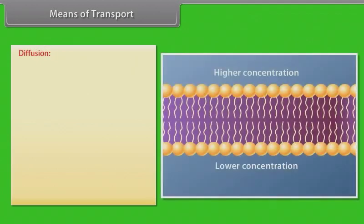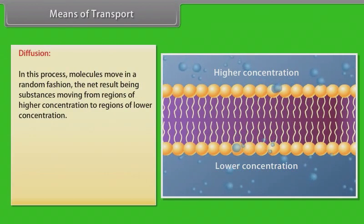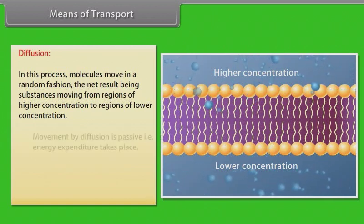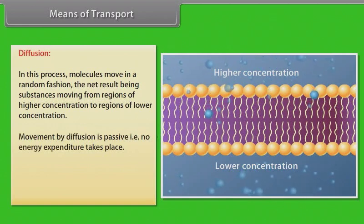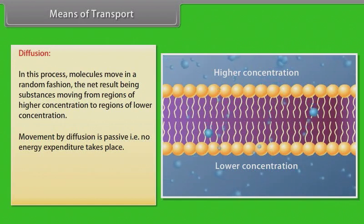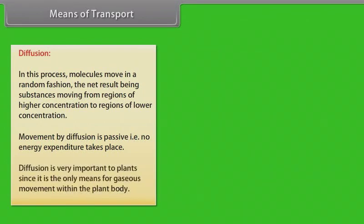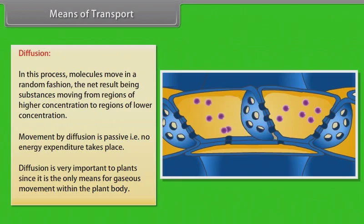Let us start with the diffusion process. Diffusion is a slow process and is not dependent on a living system. In diffusion, molecules move in a random fashion, the net result being substances moving from regions of higher concentration to regions of lower concentration. Movement by diffusion is passive and may be from one part of the cell to the other, or from cell to cell, or over short distances, say from the intercellular spaces of the leaf to the outside. No energy expenditure takes place. Diffusion is very important to plants since it is the only means for gaseous movement within the plant body.